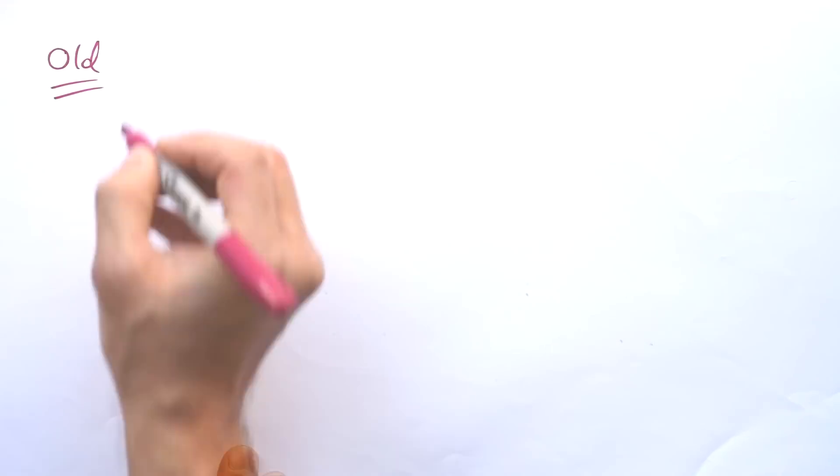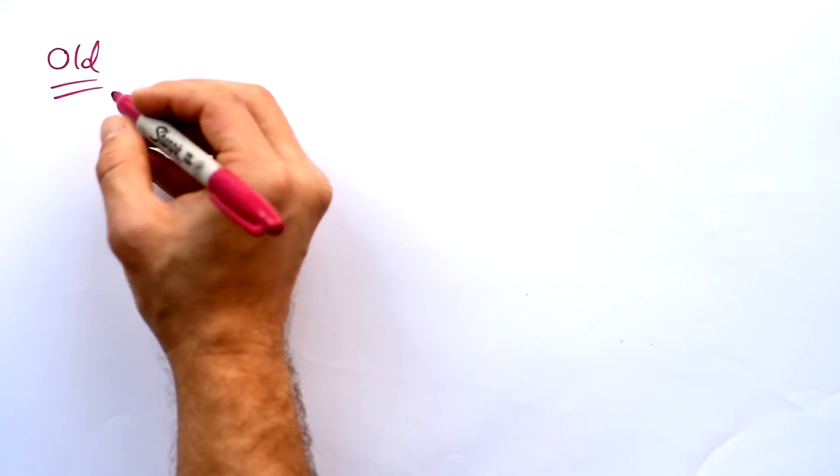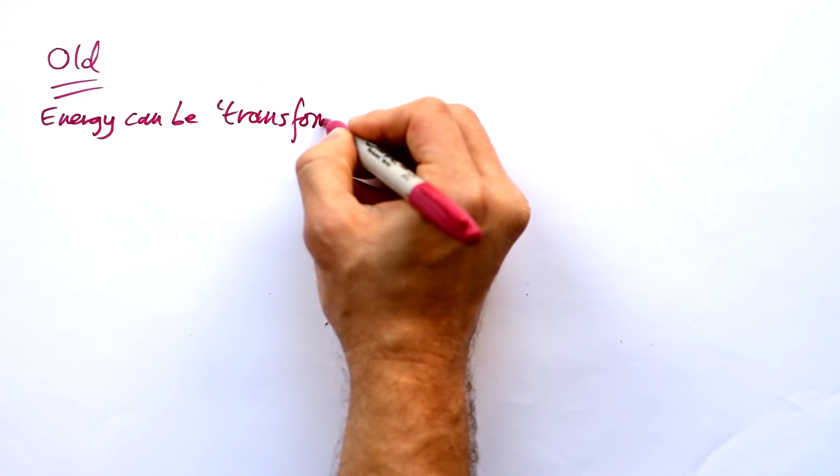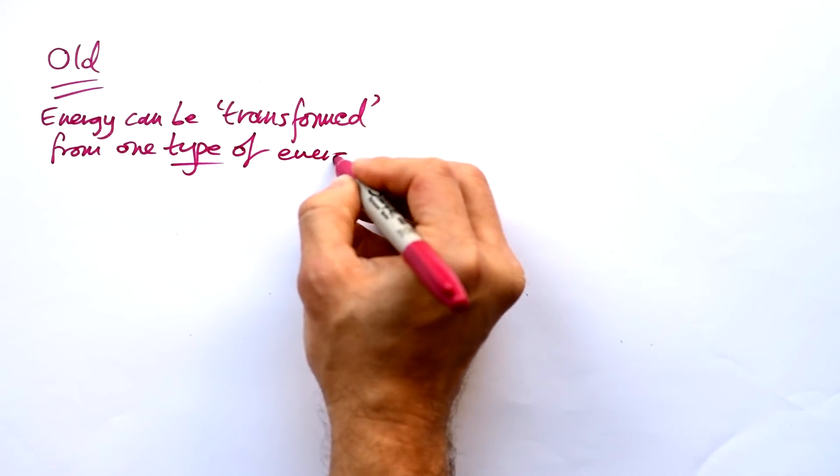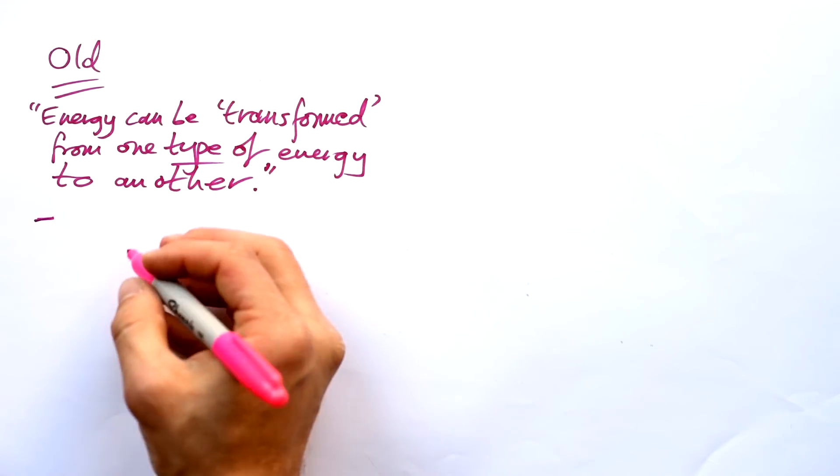Now there are people in several physics institutes saying that the way we teach and learn energy has been wrong and that there's a better way of doing it. Since I've been teaching energy, we've said that energy can be transformed from one type of energy to another. What types of energy did we have?